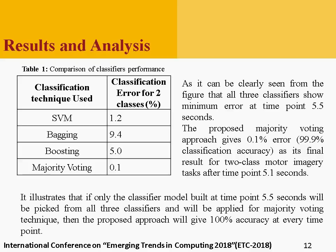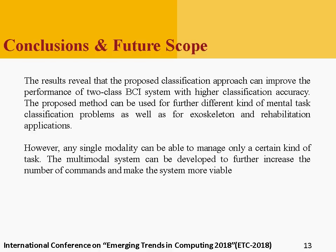We can apply majority voting to get better results. This table illustrates that if the classifier model built at time point 5.5 seconds is picked from all three classifiers and applied for majority voting, the proposed approach will give 100% accuracy at every time point. The results reveal that the proposed novel classification approach can improve the performance of the two-class BCI system with higher classification accuracy. The proposed method can be used for further mental task classification problems as well as for exoskeleton and rehabilitation applications.